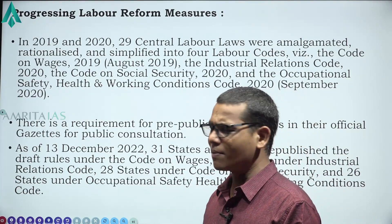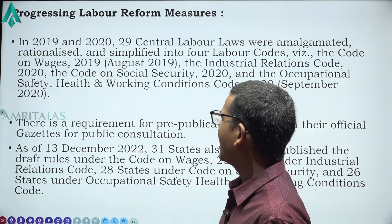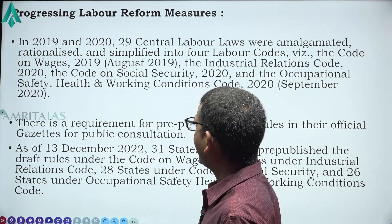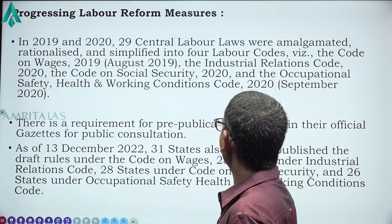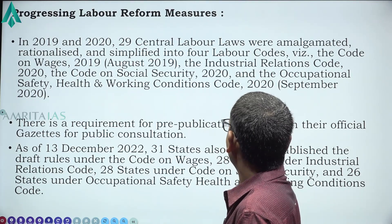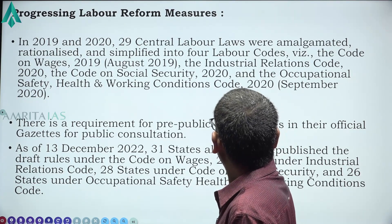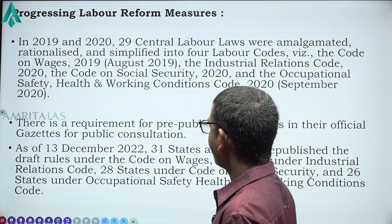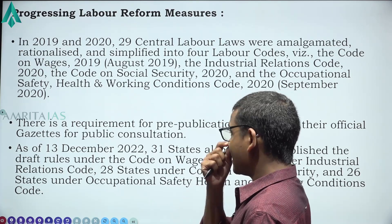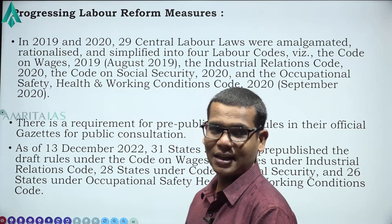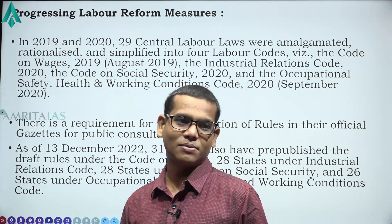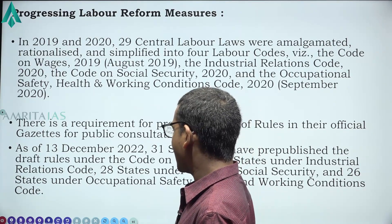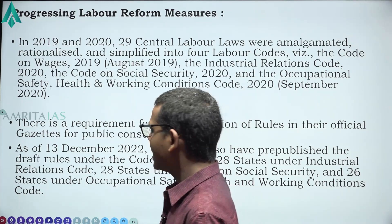On labour reform, the survey provides information on labour codes. The 29 central labour laws have been codified into 4 labour codes: the Code on Wages, the Code on Industrial Relations, the Code on Social Security, and the Occupational Safety and Health Working Conditions Code. These 4 codes have been passed by Parliament, but require pre-publication of rules since labour is a concurrent subject. Some states have already published the rules while others are in the process.